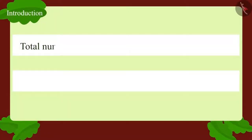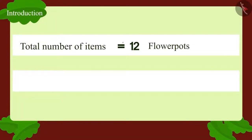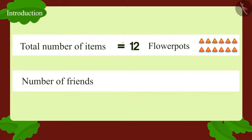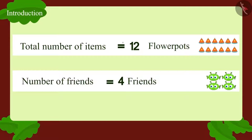What is the total number of objects here? Twelve flower pots. Among how many people are they to be divided? Four friends. Come, let us find out how many flower pots each friend will get.